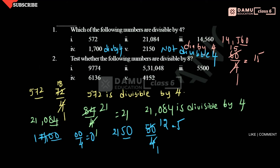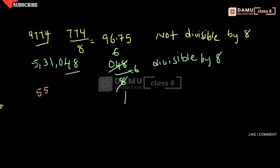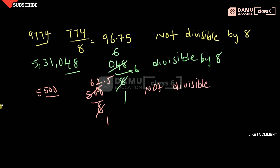Next one is 5500. The last three digits are 500. Is 500 divisible by 8? 8 times 62 is 496, and we get a remainder, so the result is in decimal format. Therefore, 5500 is not divisible by 8.